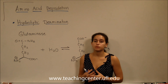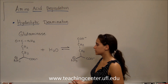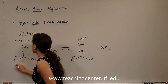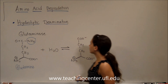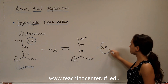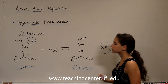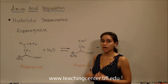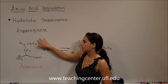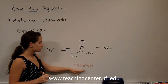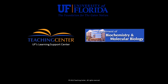Hydrolytic deamination uses water to take off an amino group. The enzyme here is glutaminase, which catalyzes the reaction. We start with glutamine, add water to remove the amino group, and glutamine becomes glutamate. With asparaginase, we do the same thing — starting with asparagine instead of glutamine, adding water to remove the amino group, and producing aspartate along with the released amino group.